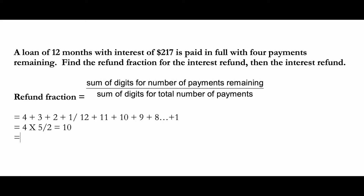For the denominator, you'll do the same thing: 12 multiplied by 13 divided by 2. In your calculator, you should get 78. Now using this information, you can calculate your refund fraction, which will be 10 divided by 78. You have now found your refund fraction.